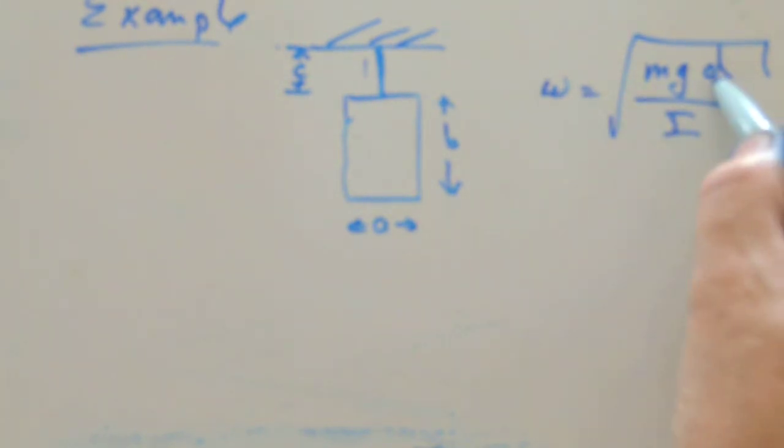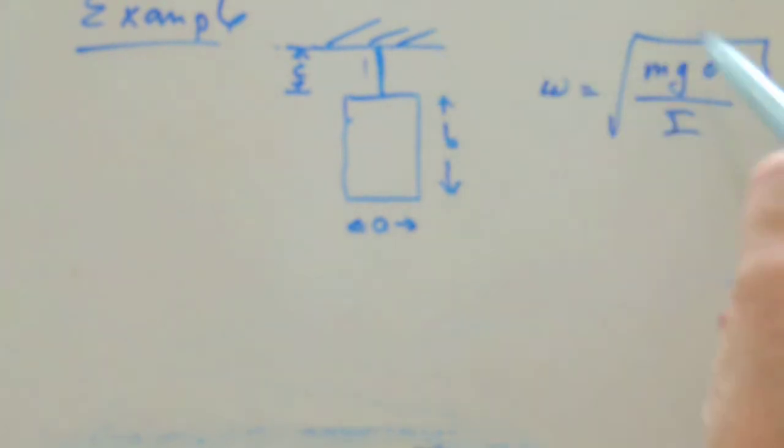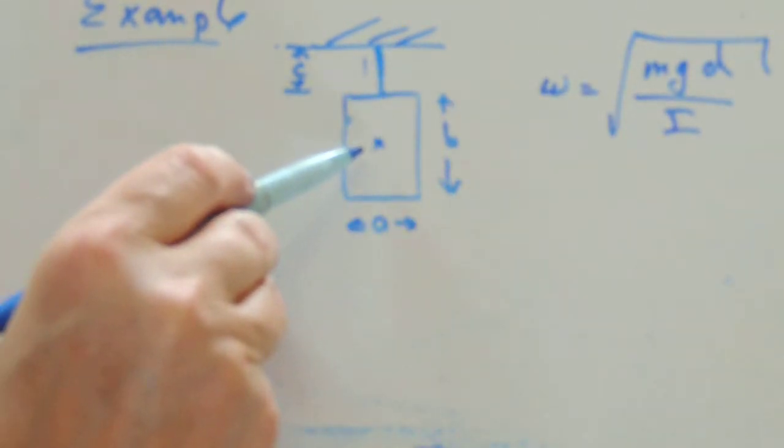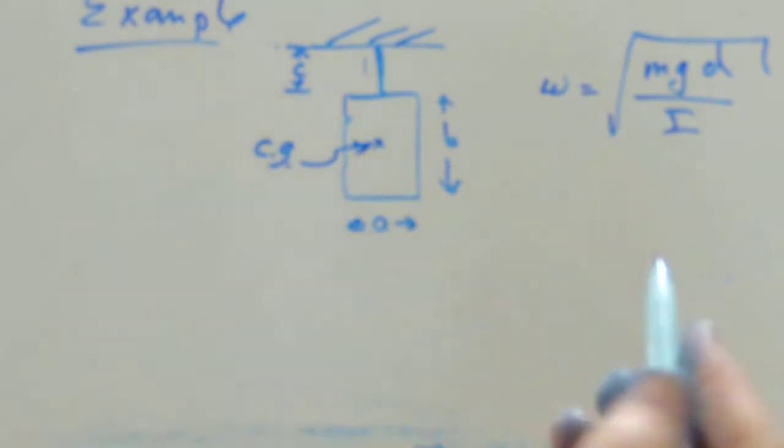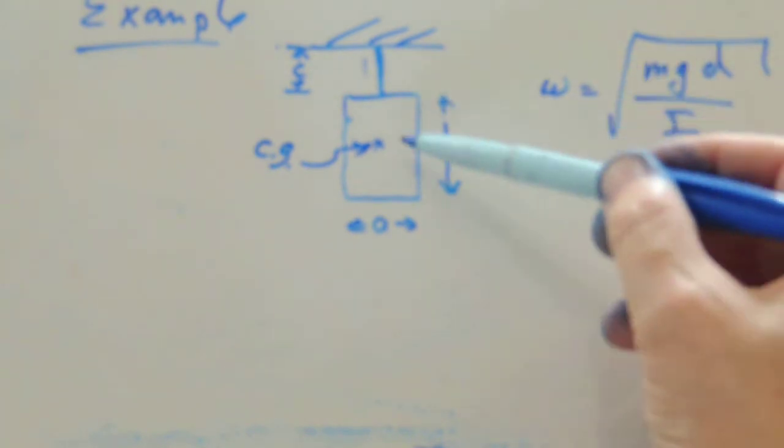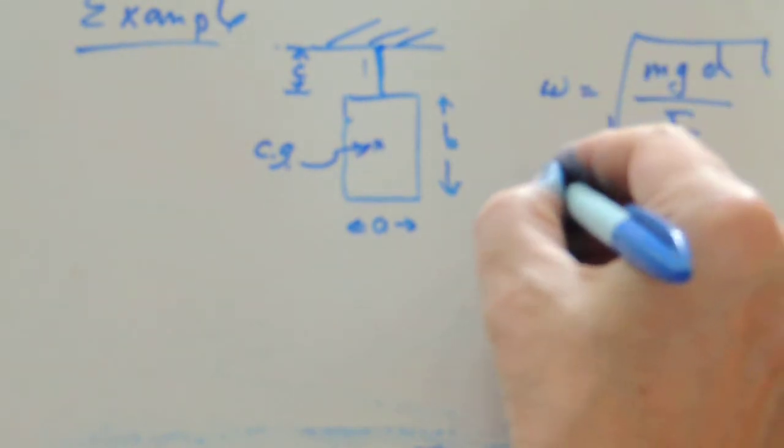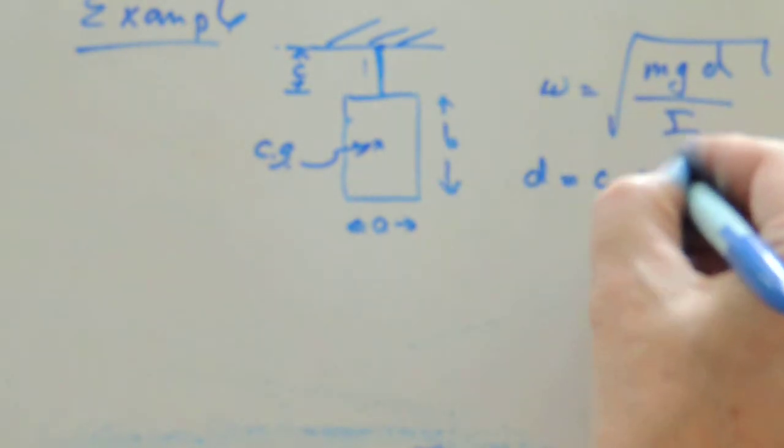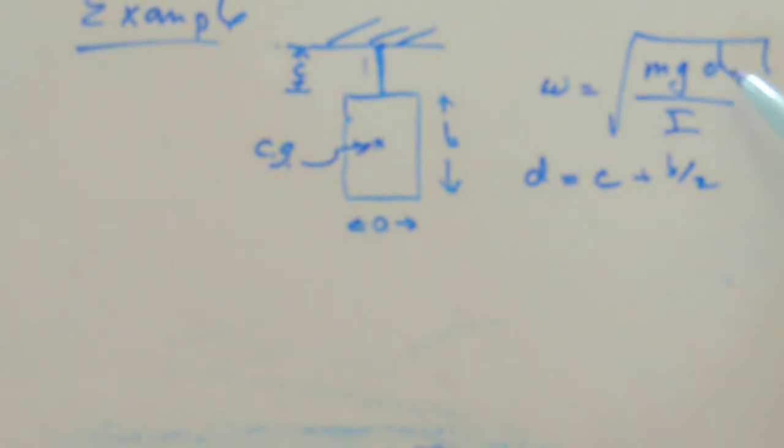Well, remember that this distance D is the distance between the center of gravity of our pendulum and the pivot point for the rectangle. It's pretty easy to figure out where the center of gravity is. And it's equally easy to see how far that center of gravity is from our pivot. That looks to me like that must be the distance C plus half of the distance D. And so we now know what we would substitute in for D.